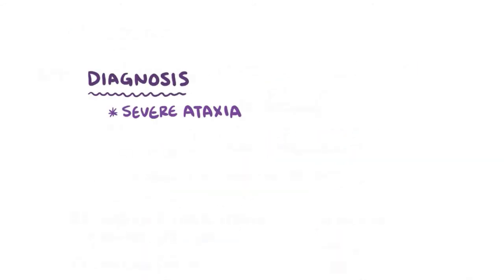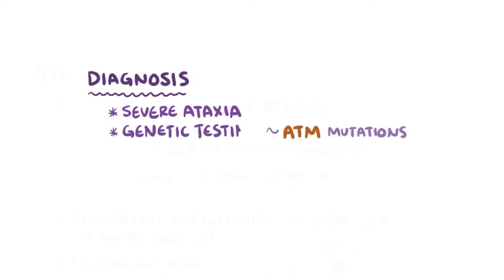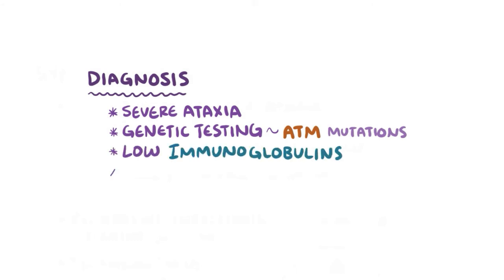The diagnosis of ataxia telangiectasia is based on a person having severe ataxia together with mutations on ATM genes, which can be identified through genetic testing. There is usually a low level of serum immunoglobulins,